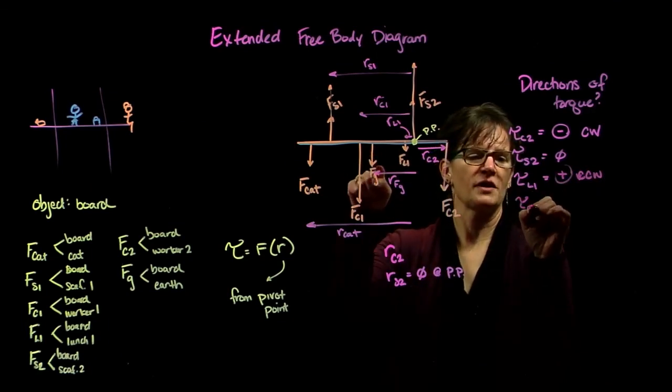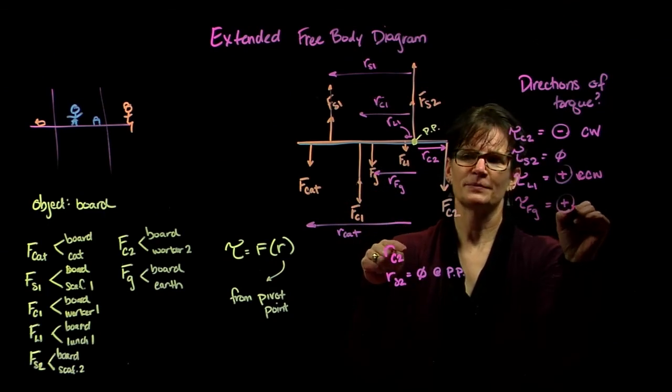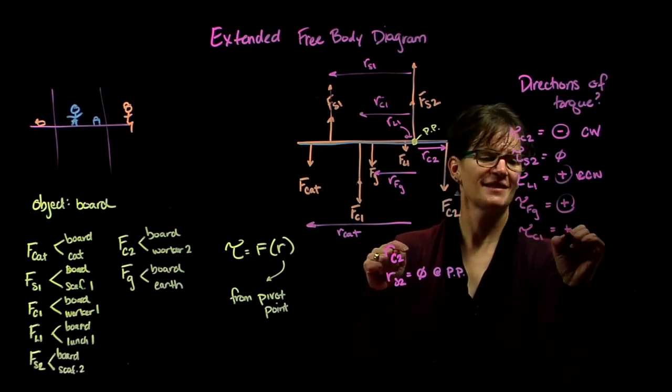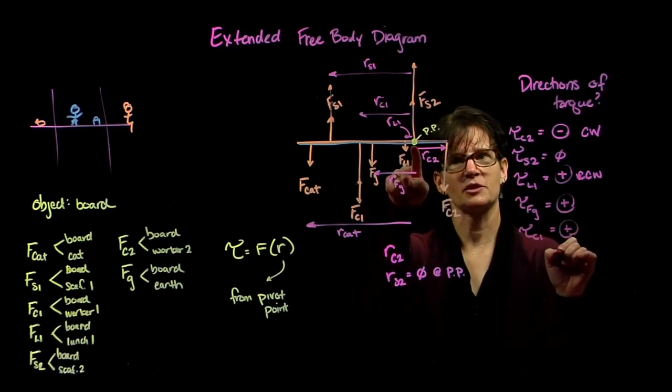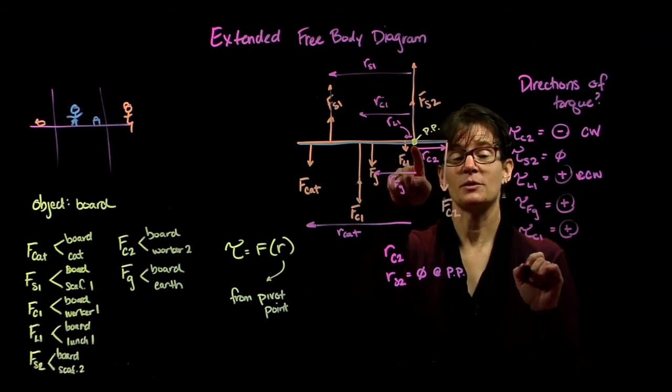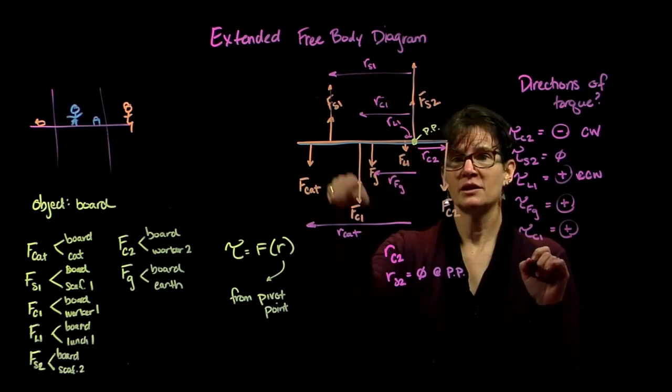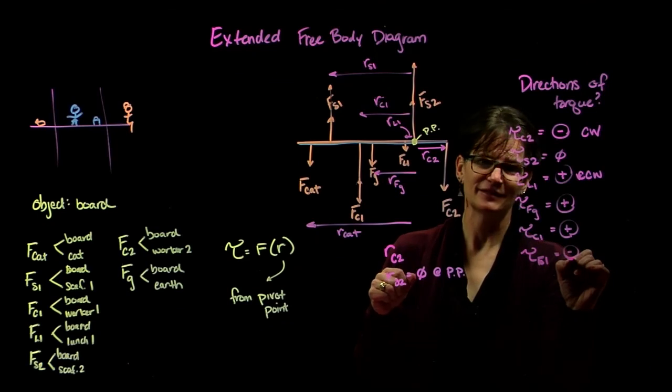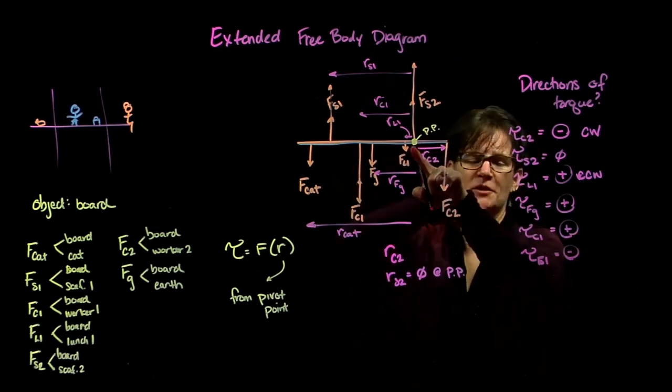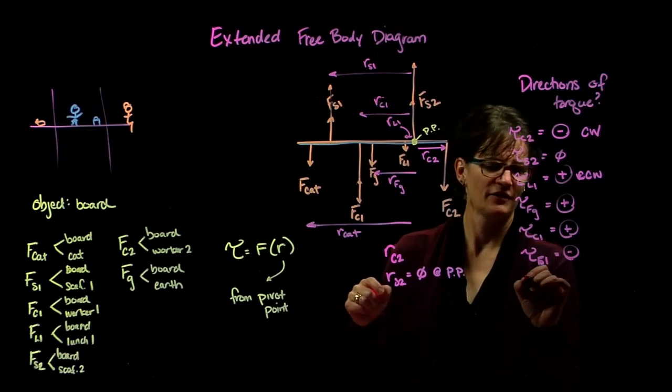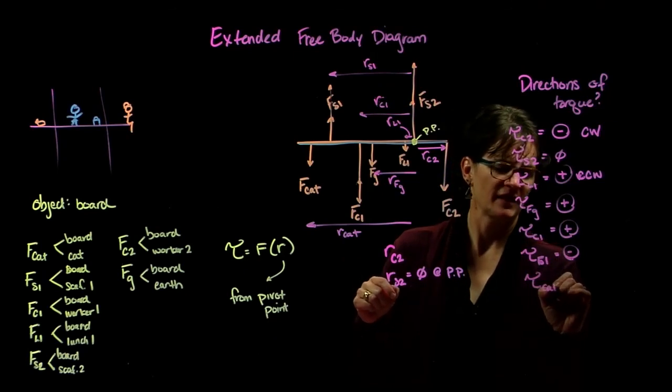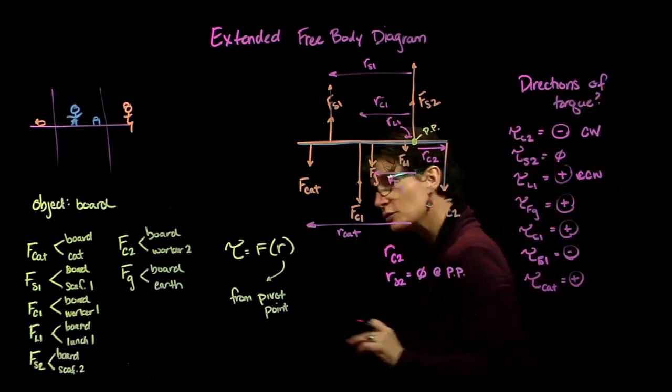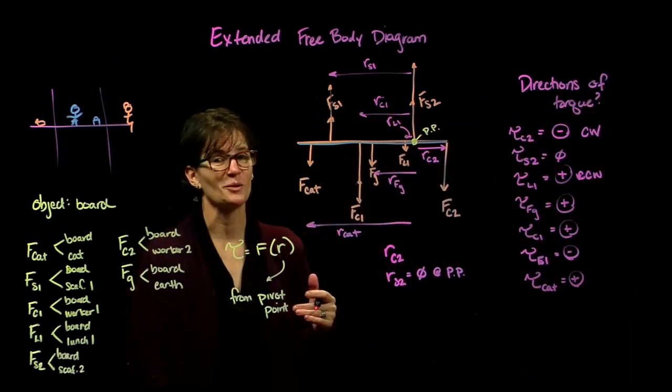The torque of the force of gravity, positive. The torque of construction worker one, positive. All would result in that object rotating about the pivot point in the positive direction or the counterclockwise direction. The torque of scaffolding one is negative, it would cause the object to rotate in the clockwise direction. And finally, the torque of the cat is positive. So as you do the analysis, it's always useful to remind yourself what the direction of that torque might look like.